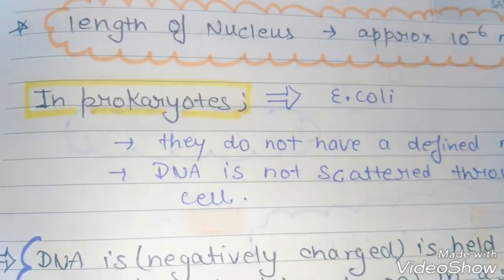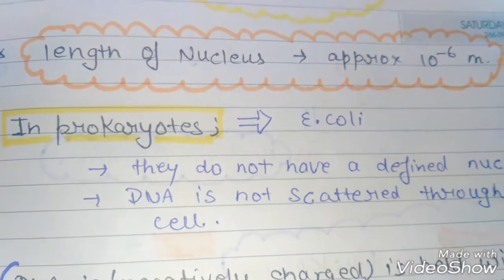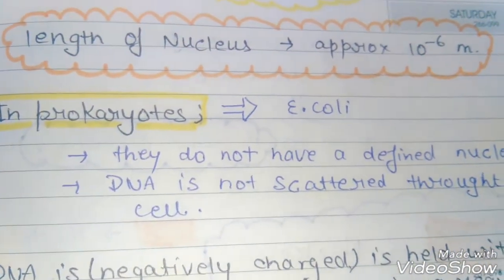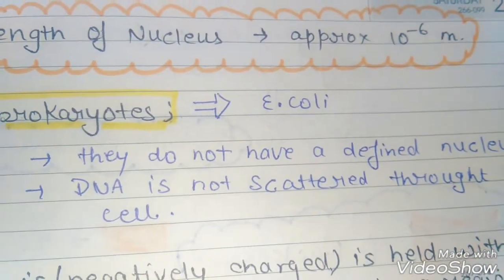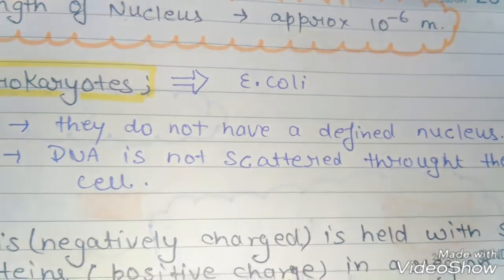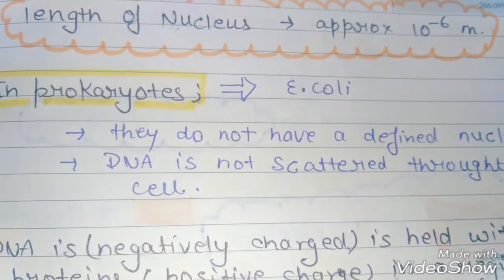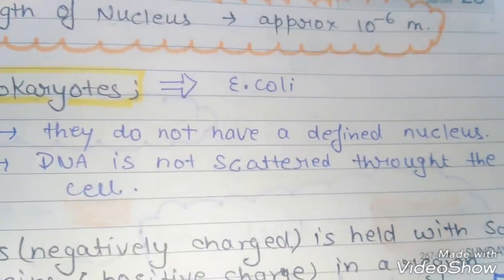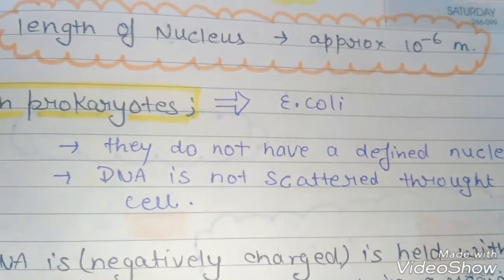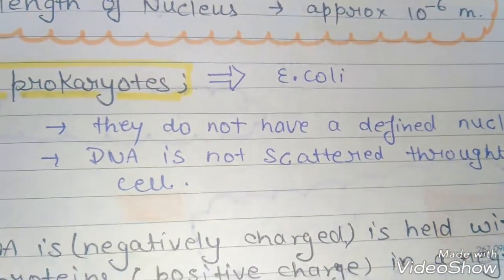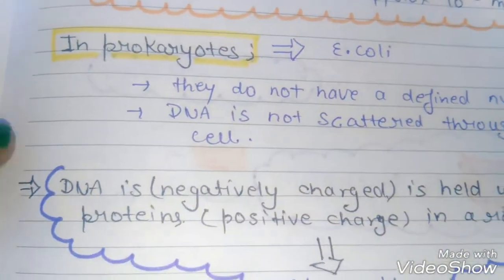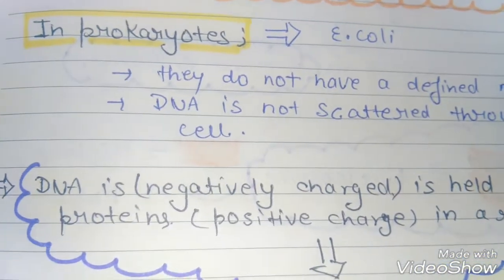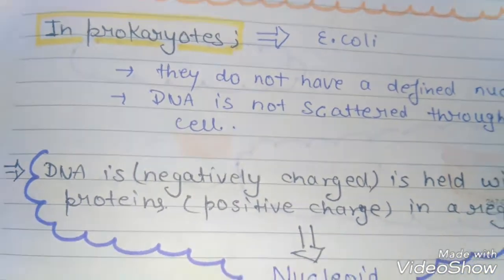What is the packaging of DNA in prokaryotes? Prokaryotes don't have a defined nucleus. DNA is not scattered throughout the cell.